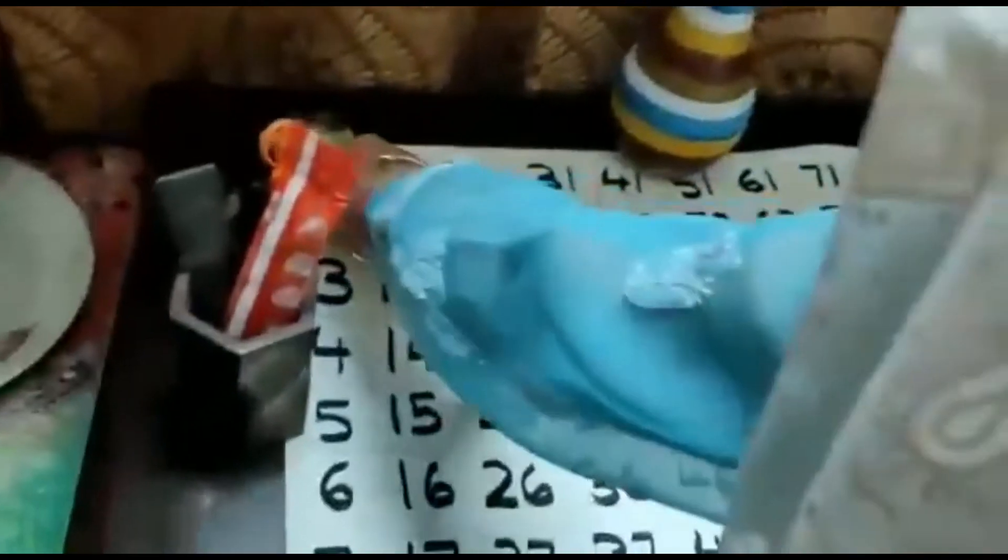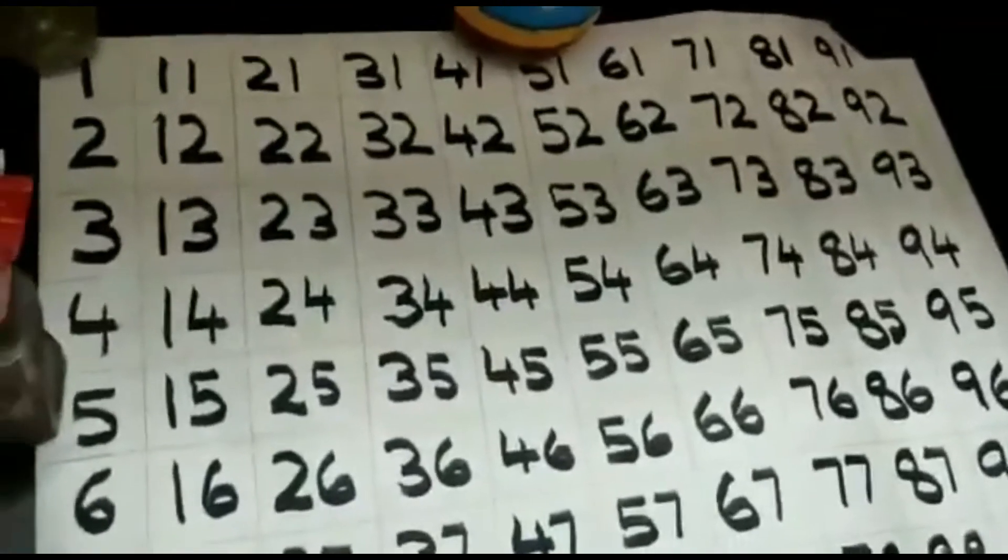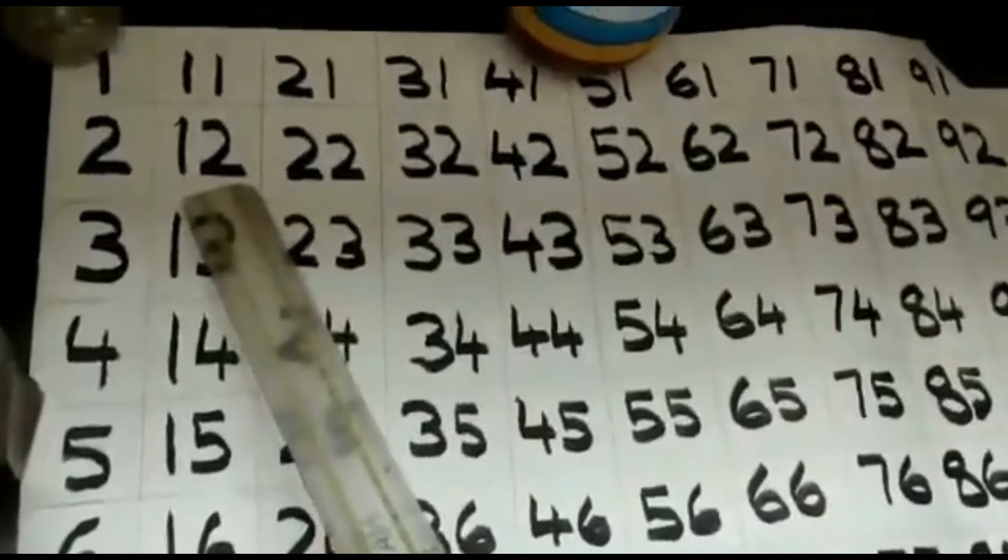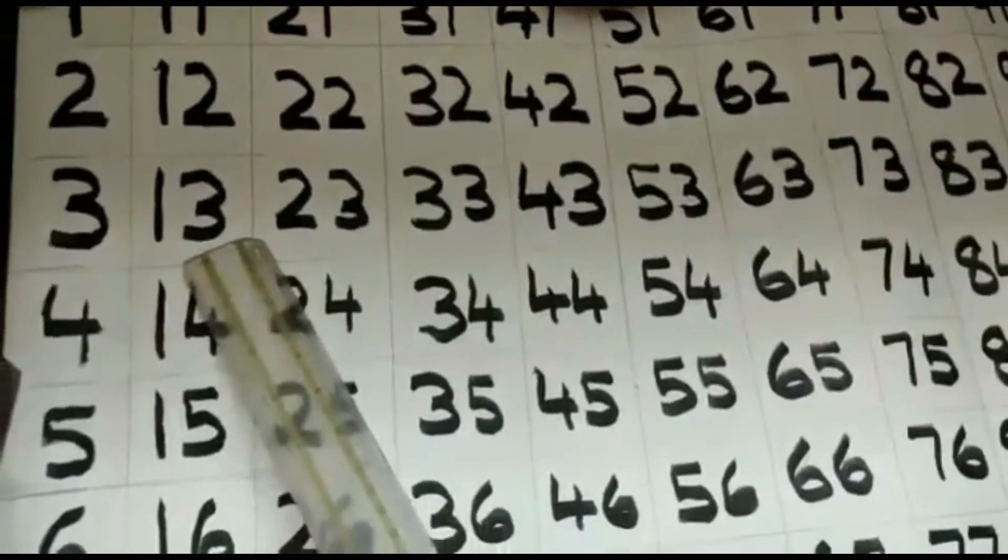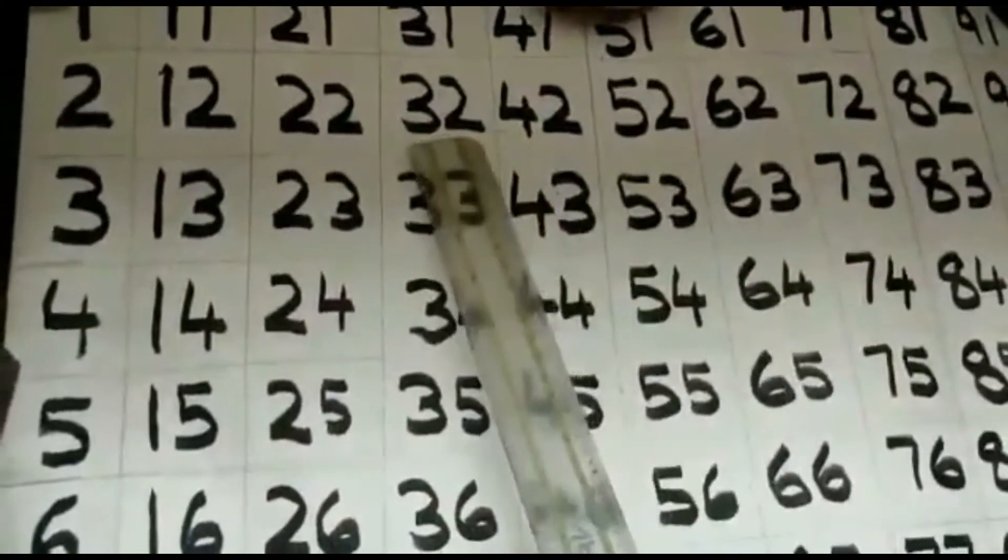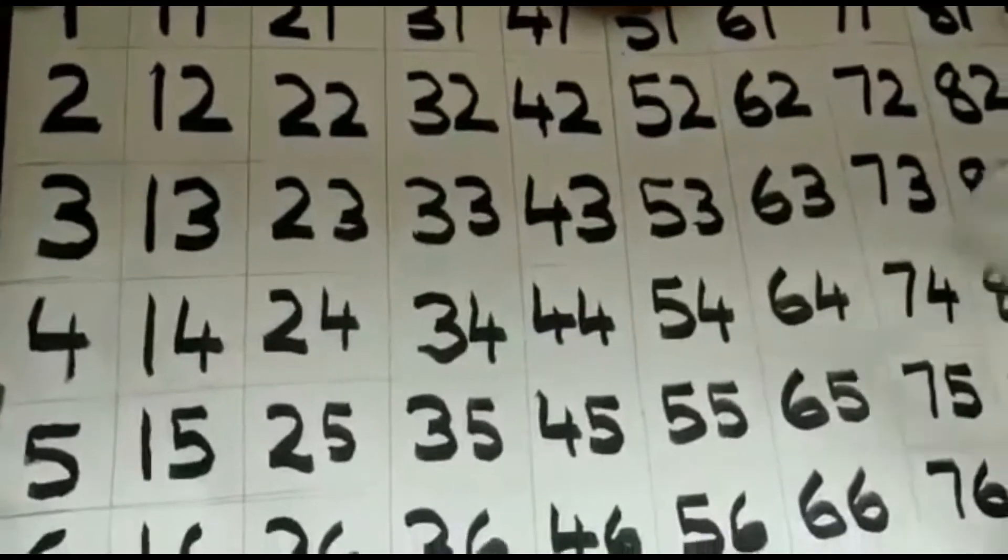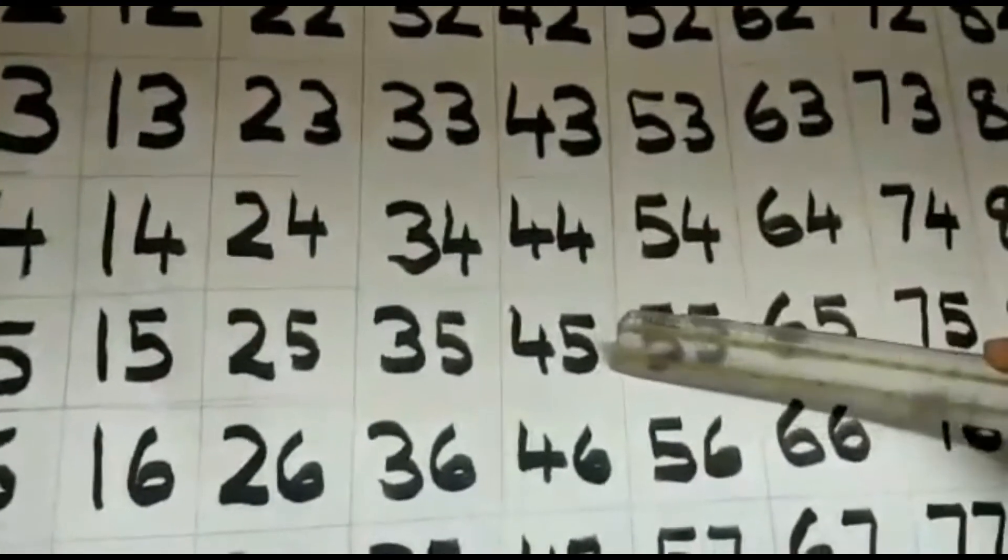First of all, come, let us have a look at this number chart. There are numbers written here from 1 to 100. Now, in the number grade, if I ask you what is one more than 12, you would say 13. What is one more than 32? 33. What is one more than 44? The answer is 45.